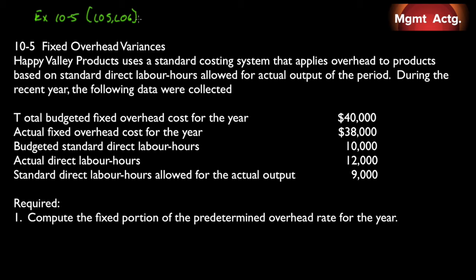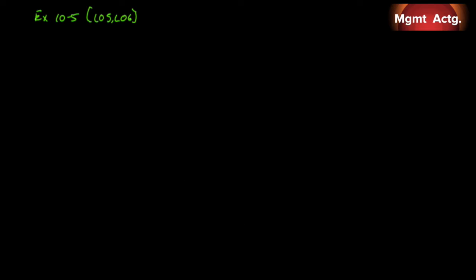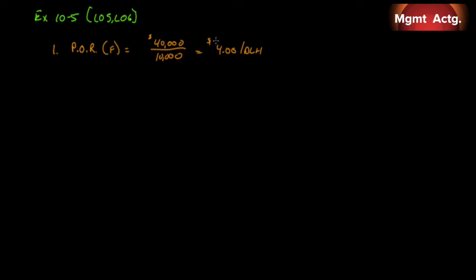Number one: compute the fixed portion of the predetermined overhead rate for the year. We're only concerned with the fixed portion of the predetermined overhead rate. We need our budgeted fixed manufacturing overhead, which is $40,000, and our denominator activity, which is our budgeted standard direct labor hours of 10,000. Simple division gives us $4 per direct labor hour. That's number one done.